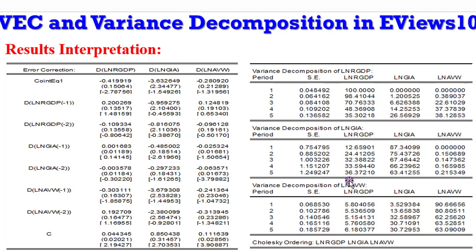Moving now to AVW — it's the same interpretation. Looking at the short run, real GDP is explaining only 5.8% of the forecast error variance in AVW, while GIA is explaining only 3.52%. So both real GDP and GIA are exhibiting strong exogeneity, meaning they have weak influence on predicting AVW in the short run. AVW predicts itself by 90.67%. As we go further into the future, the influence of GIA becomes very strong on predicting AVW, while the influence of AVW on itself decreases. You can say a lot about variance decomposition for each variable in predicting or accounting for variation in other variables.